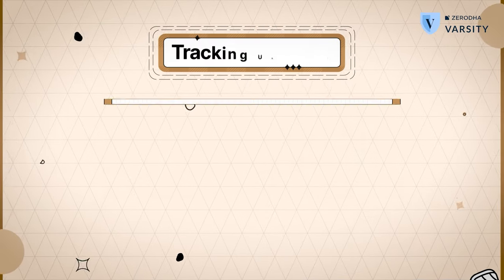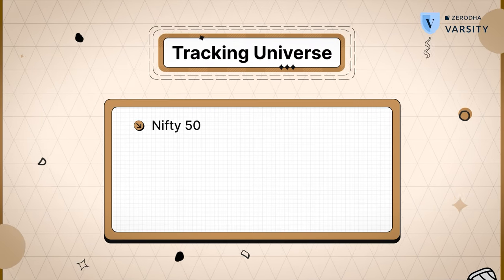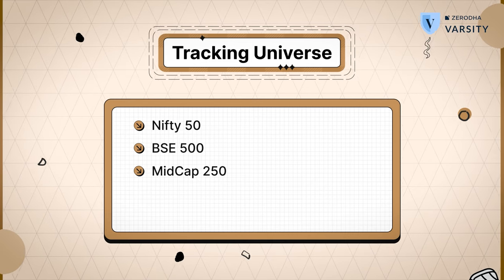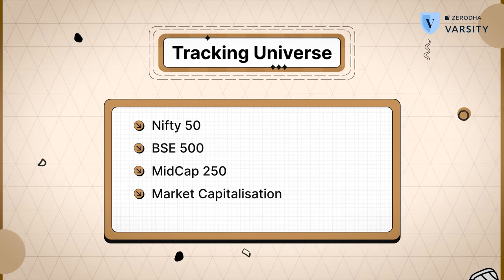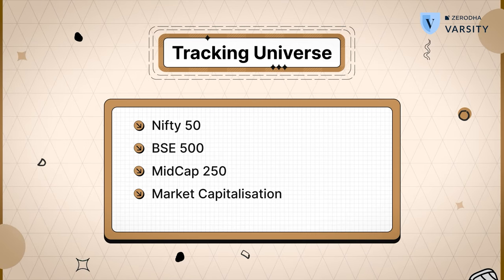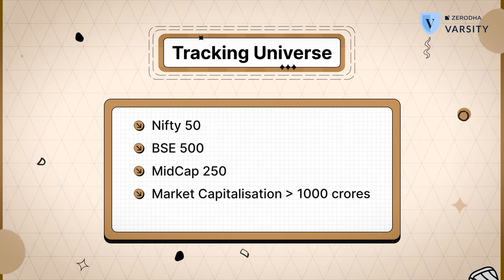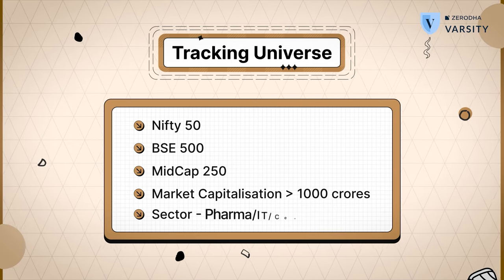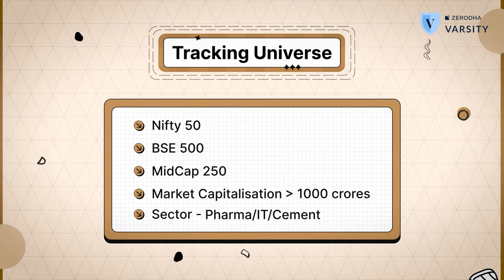As a trader or investor, you're much better off by clearly defining your tracking universe. The tracking universe can be based on any criteria. For example, you may be interested in tracking only the Nifty 50 stocks, BSE 500 stocks, or maybe the mid-cap 250 stocks. Or it can be based on market capitalization — for example, only companies with a market cap of 1,000 crores or more. Or it can be based on a particular sector, such as only pharma, IT, or cement stocks. The tracking universe should be based on criteria that you understand well. If you're unsure where to start, I would suggest you look at BSE 500 as a starting point, since most good-quality stocks are in this list anyway.